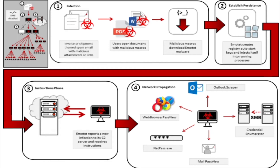In this diagram, we will understand the four phases: first, Infection; then Establish Persistence; then the Instruction phase; and lastly, Network Propagation — in which we see how credentials are obtained from the organization or victim system. For Infection: you receive an email, open it, click on it, and malicious macros download the Emotet malware. For Establish Persistence: once malware gains access to a system, it looks to stay for a long time. Emotet creates registry auto-start keys and injects itself into a running process.